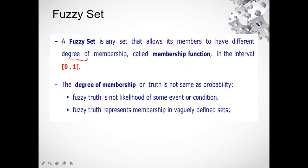A fuzzy set is any set that allows its members to have different degrees of membership — that is the membership function. The membership function defines the value of whether the element belongs to a particular set, and in fuzzy set it means the degree of truth in the set. The degree of membership or truth is not the same as probability; fuzzy truth represents membership in a vaguely defined sense.